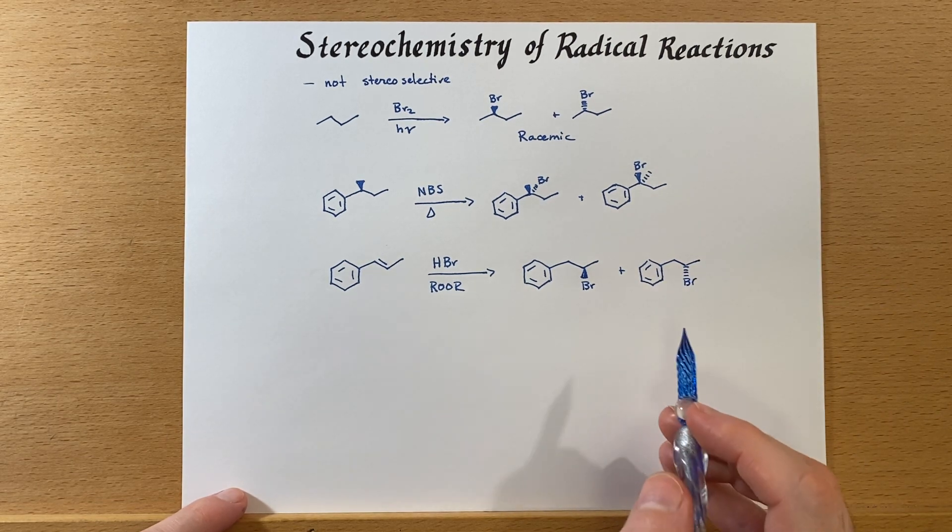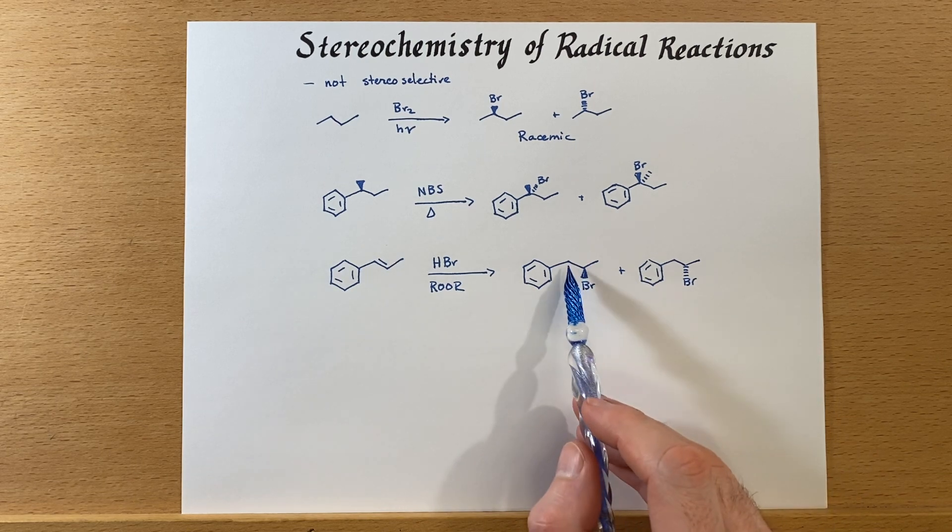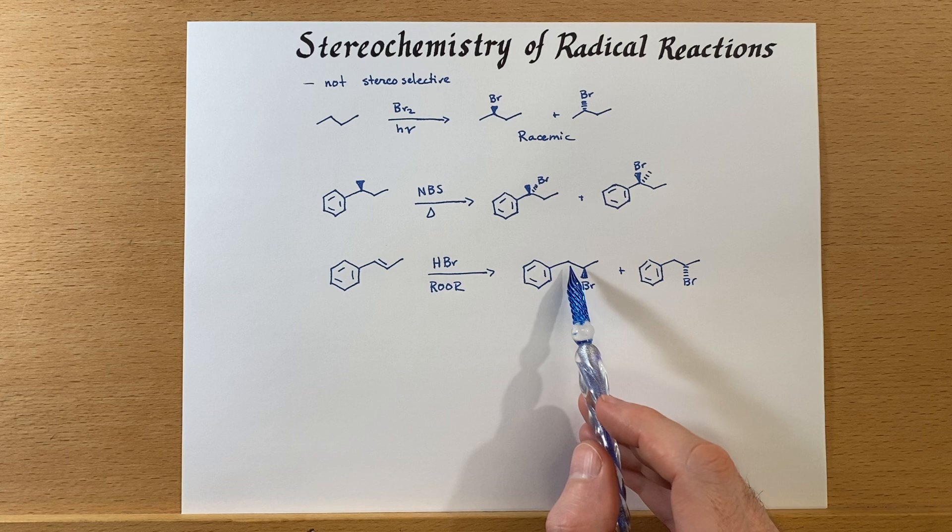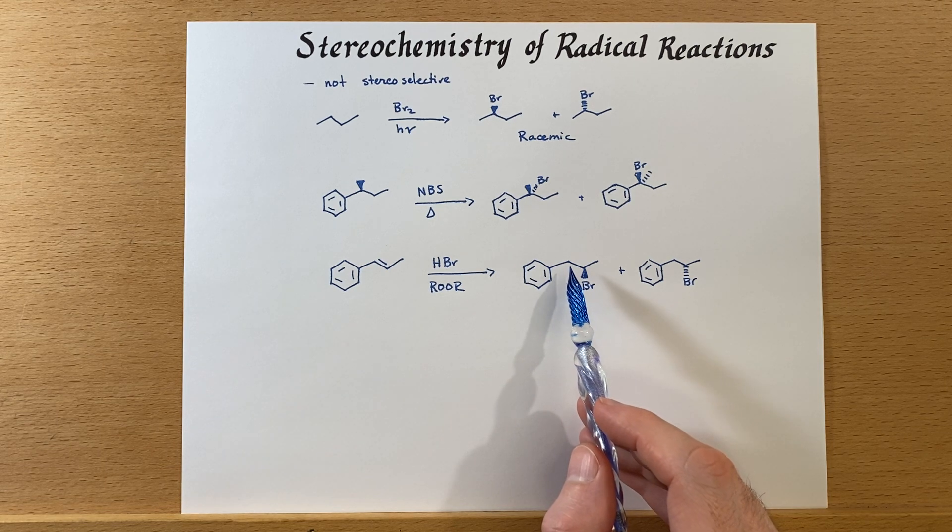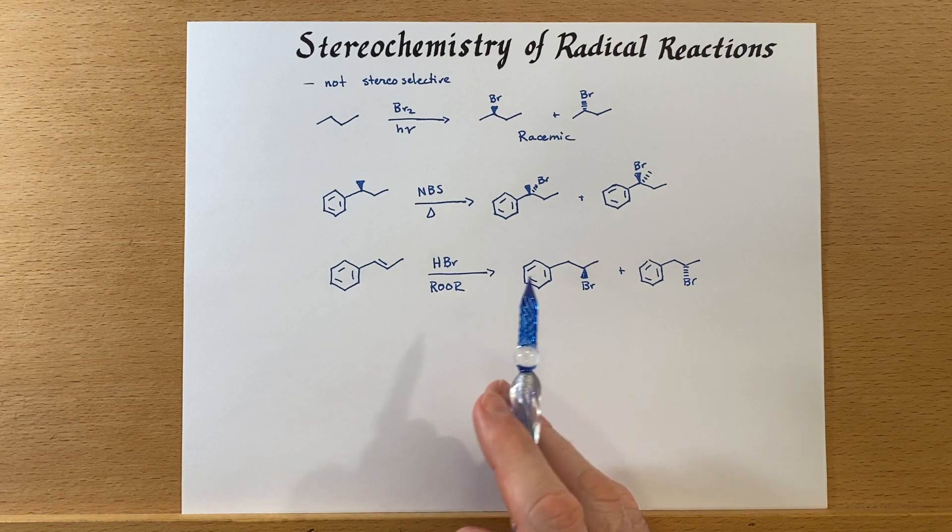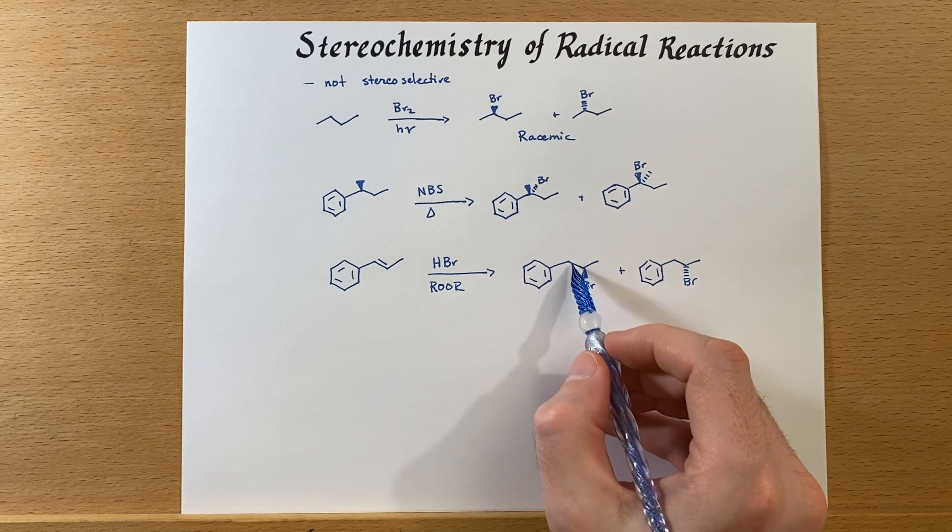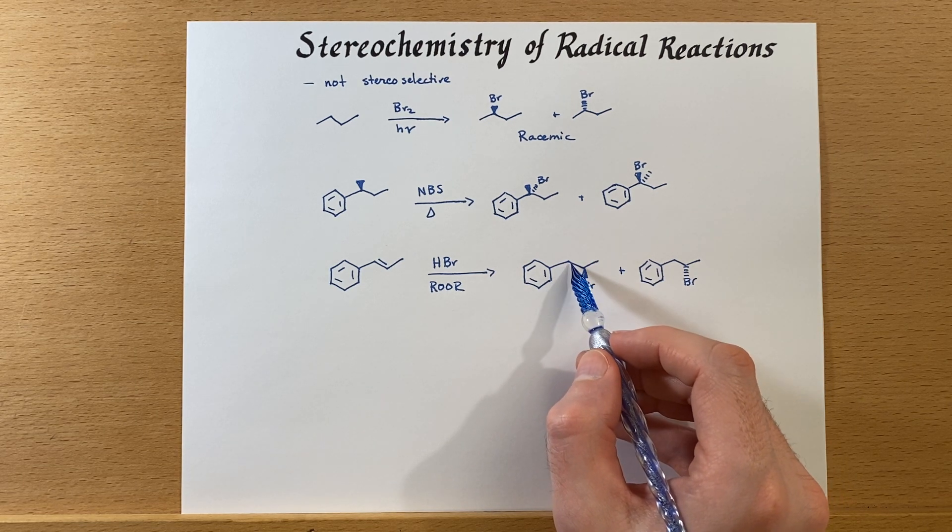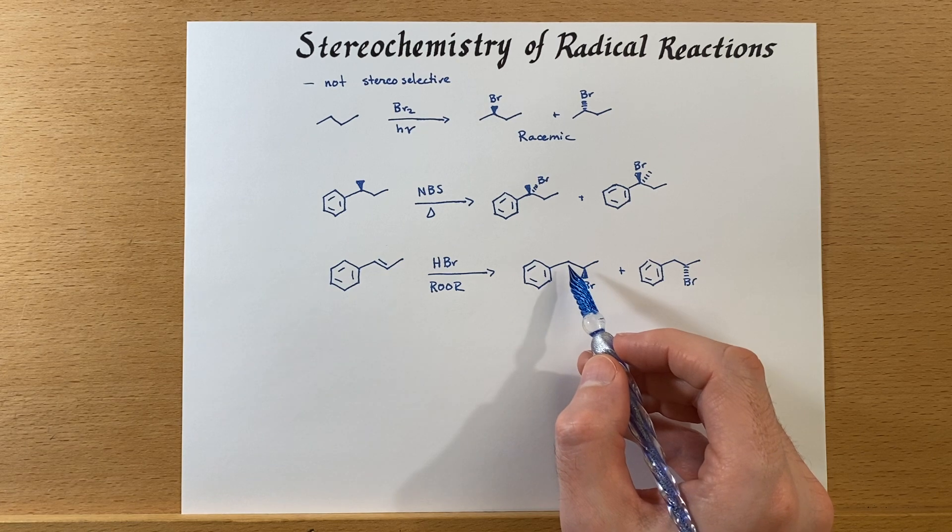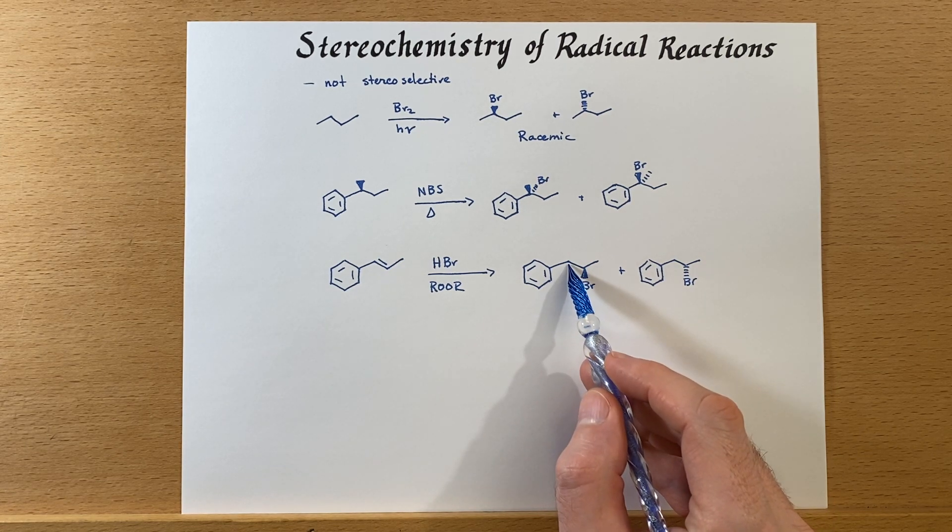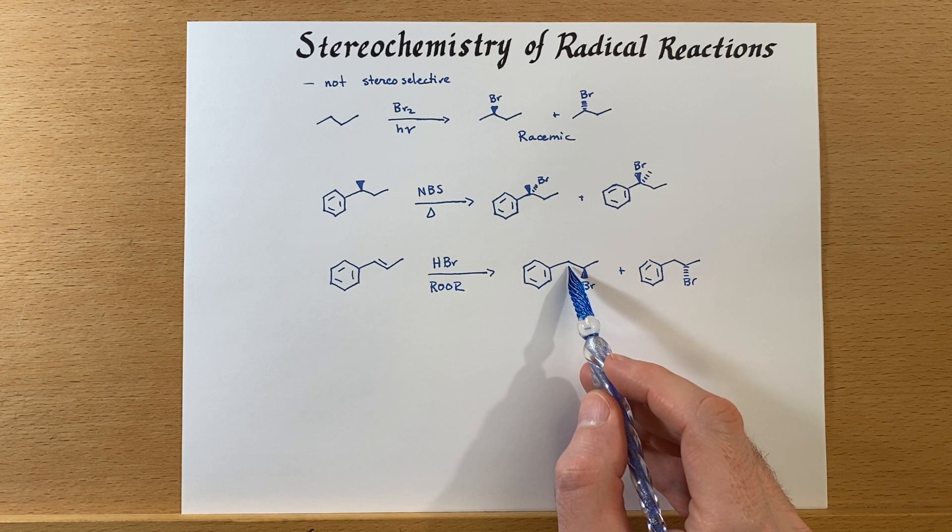Now you will notice that we do not get substitution at the benzylic position, and we would expect to get substitution there if we did not put in the peroxide, because that is the Markovnikov location. This is a benzylic carbon. Carbocations there are much more stable. Well, for that same reason, radicals in that position, in the benzylic position, are more stable.